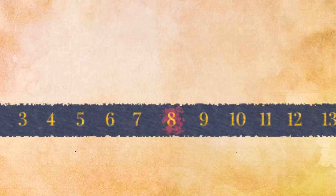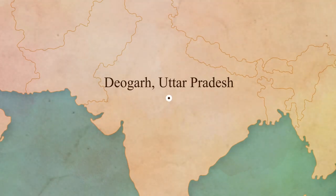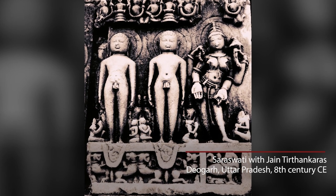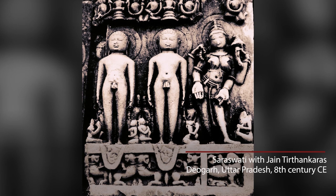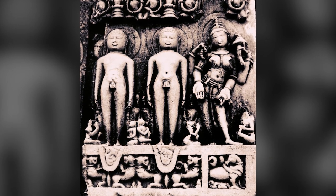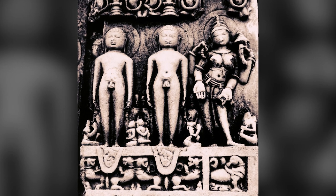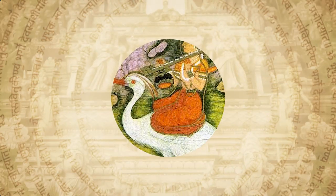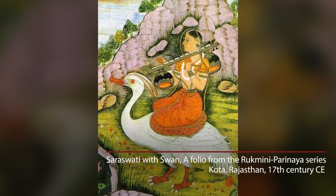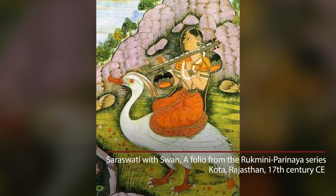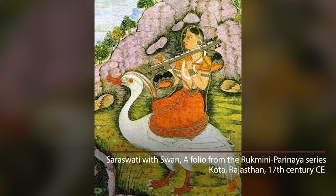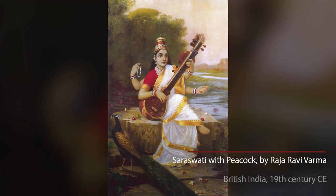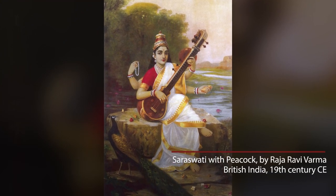In the Jain traditions, Saraswati is far more elaborate. She is the goddess of the arts, the goddess of music, and she is associated with the wisdom transmitted by the Tirthankars. She stands next to the Tirthankars holding musical instruments — important because, for a long time, wisdom was transmitted orally and writing was restricted to a small group of people. In the Jain Shwetambar tradition, her symbol is the swan or the goose, while in the Jain Digambar tradition, her symbol is the peacock. And so today we find both these images even in Hindu art.